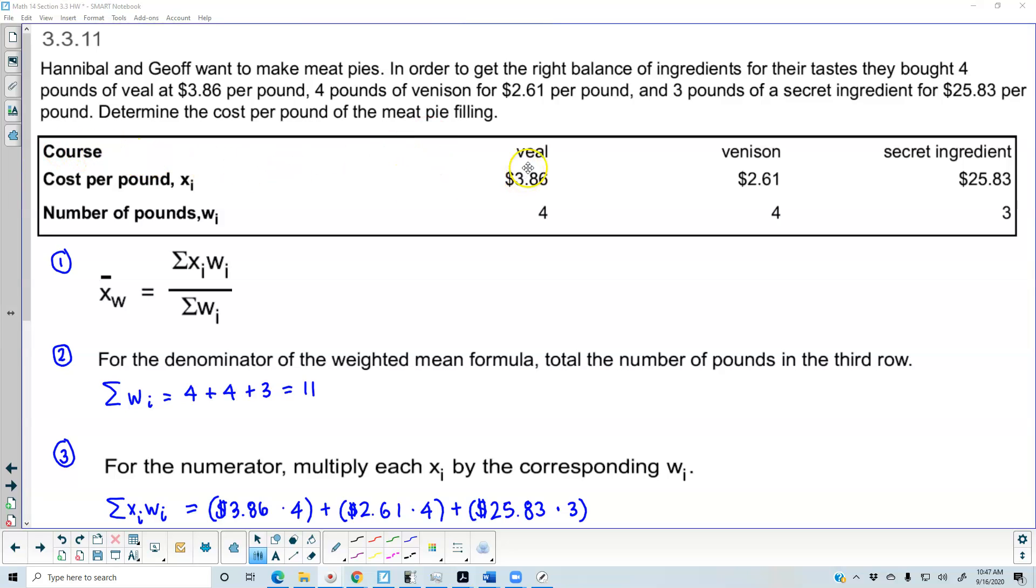You want to determine the cost per pound of the meat pie filling. So here's the table with courses: veal, venison, and secret ingredient. The cost per pound is x_i, as you can see in that row, and the last row is the number of pounds, w_i.